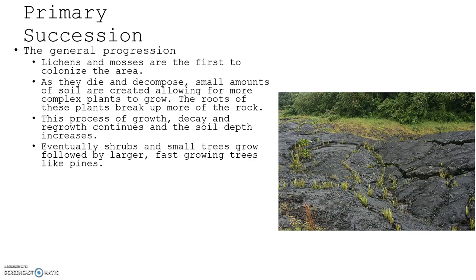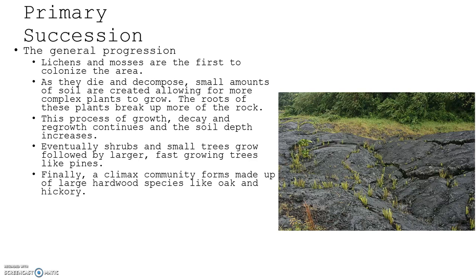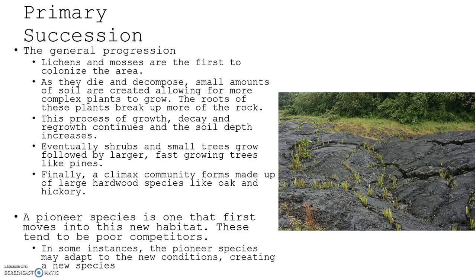Eventually shrubs and small trees can grow, followed by larger, fast-growing trees like pines. Finally, a climax community forms made up of large hardwood species like oak and hickory. A pioneer species is one that first moves into this new habitat. These tend to be poor competitors, and in some instances the pioneer species may adapt to the new conditions, creating a new species.